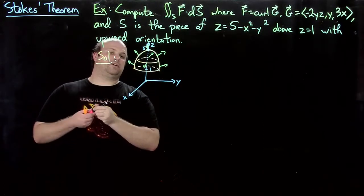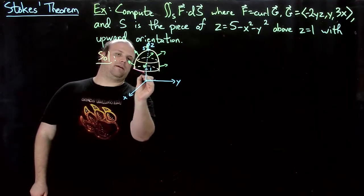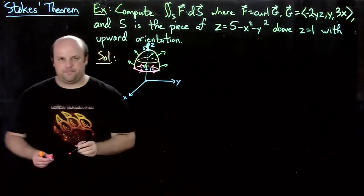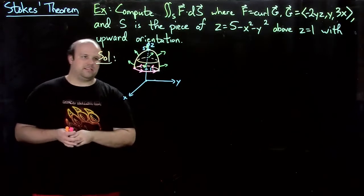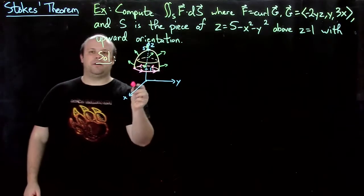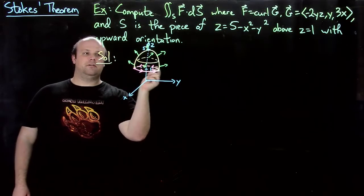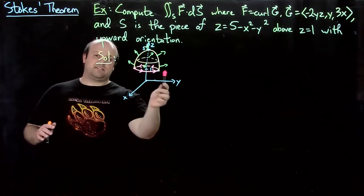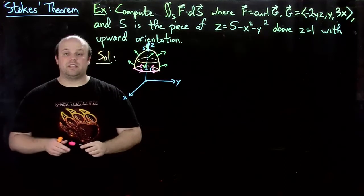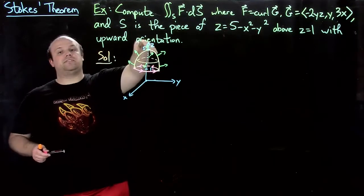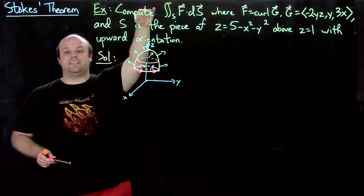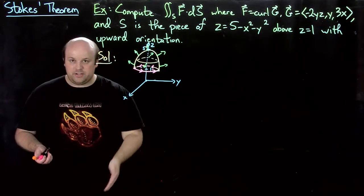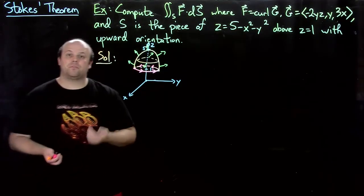So what kind of orientation does that induce on the boundary? Well, it means we must be going around this way. Because if we walk along this surface here with our head pointing in the normal direction, then if we walk in this counterclockwise way, the surface is on our left. So if you view this surface from above, like stand really high up on the z-axis, say at z equals 10 or something, and look down at it, you'll see a counterclockwise orientation.